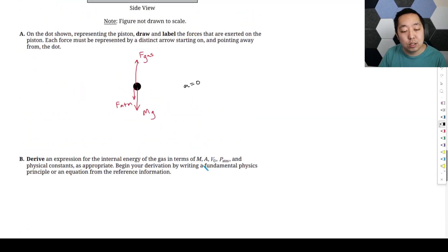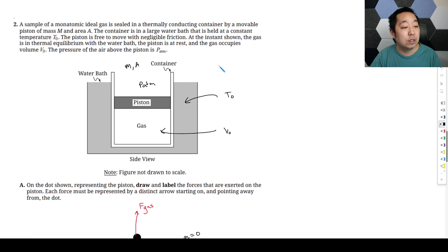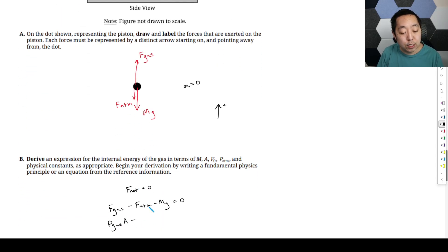Derive an expression for the internal energy of the gas in terms of M, A, V0, P atmosphere, and physical constants as appropriate. Begin your derivation by writing a fundamental physics principle or an equation from the reference information. Because they gave you a free body diagram, you better believe you are going to use that in some way. In this case, because the acceleration is zero, we know that F net is going to be zero. If we make up positive, that's going to be force from the gas minus force from the atmospheric pressure minus mg equals zero.